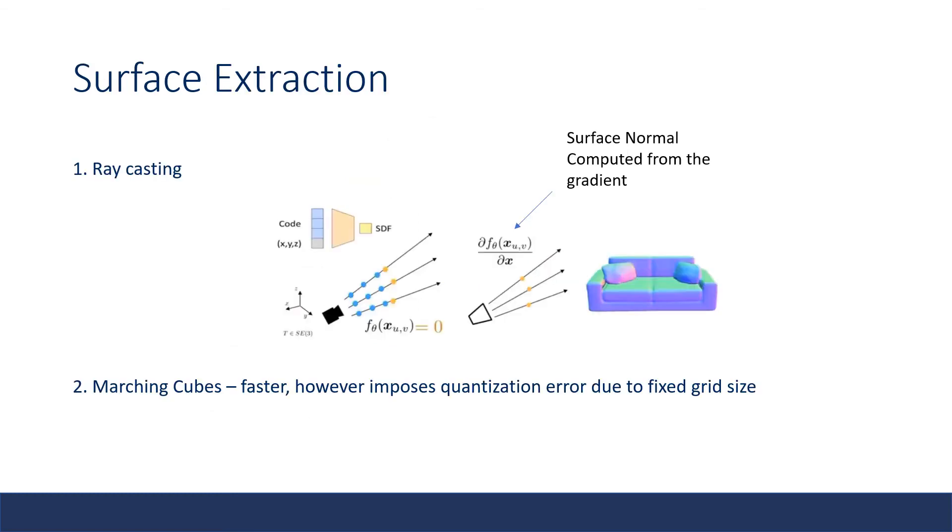There are two ways to use deep SDF representation in real applications. The deep SDF can be used in rendering process with ray casting, where the user shoots rays from each pixel until it meets the zero crossing to obtain the depth map. The surface normal can be calculated by taking gradients through backpropagation.